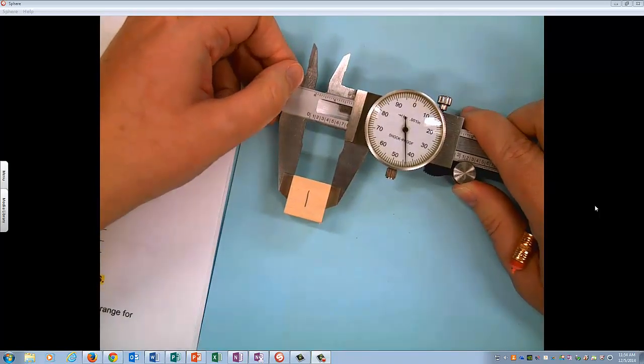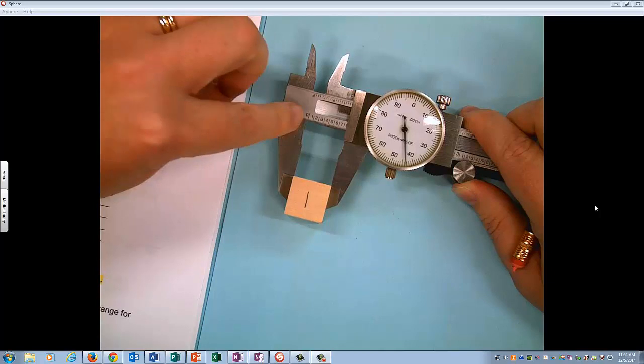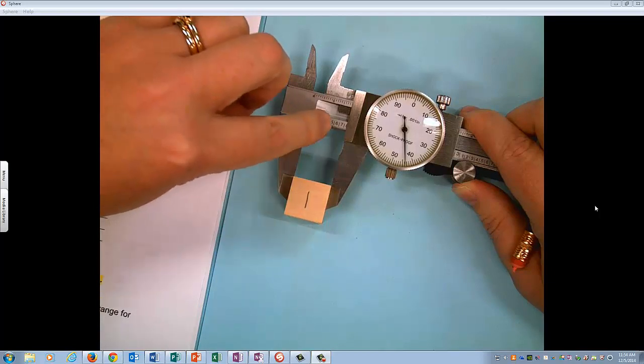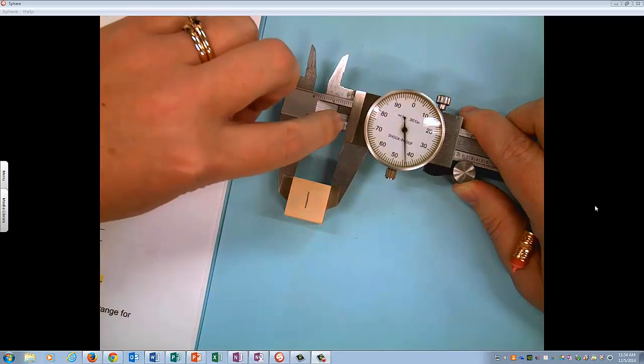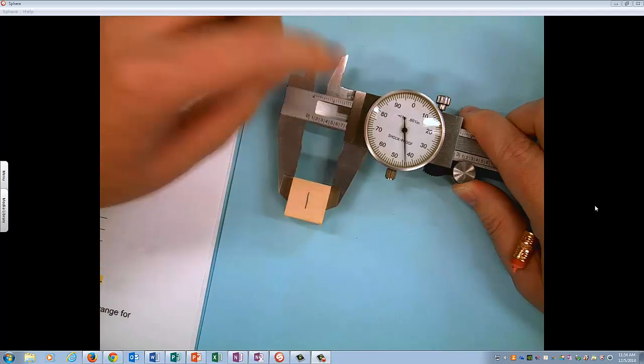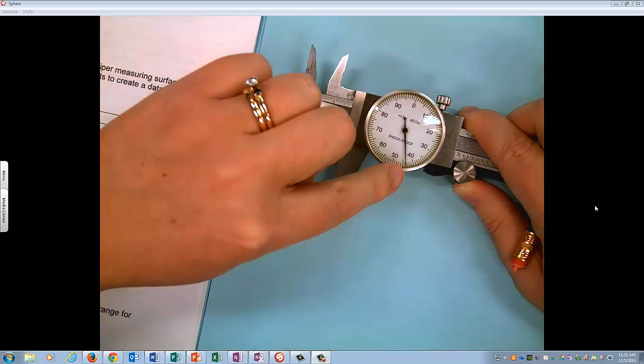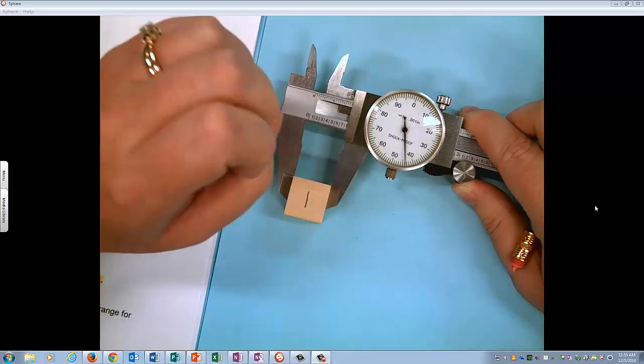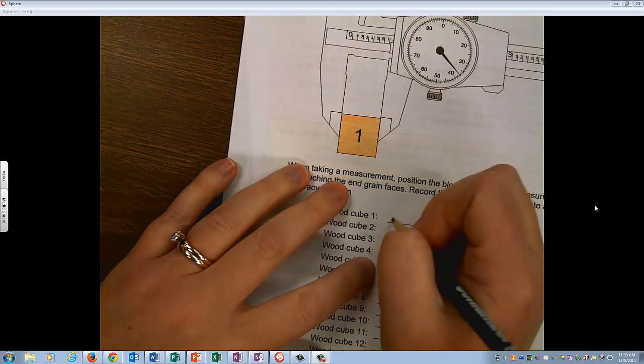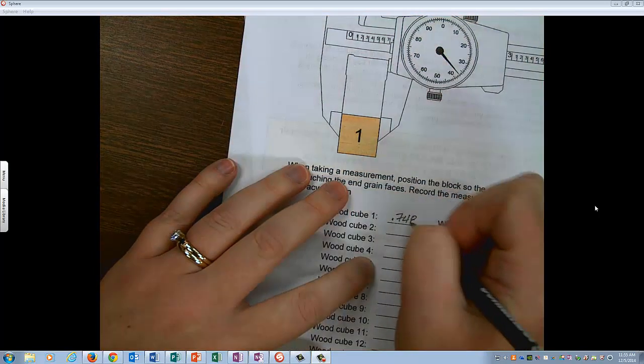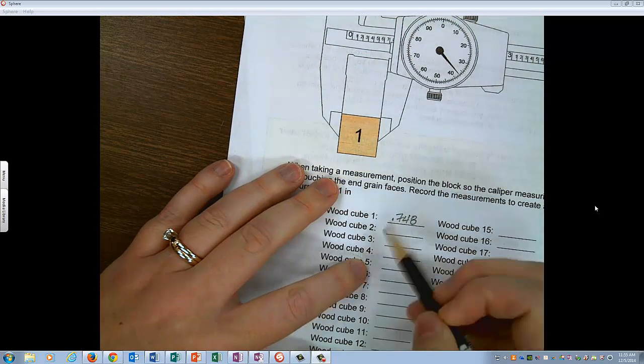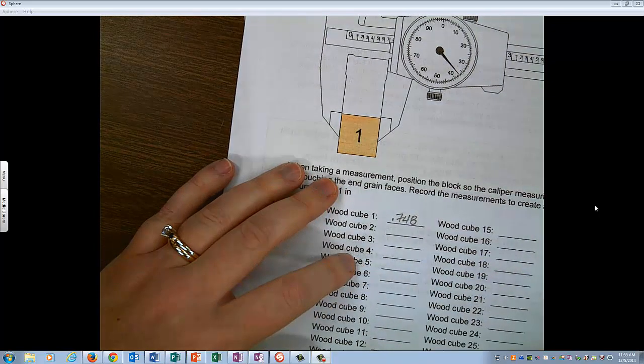So hopefully you guys can see this on the document camera. But I see point seven. I can't read eight because I only see the line behind seven. So point seven four eight. So I am going to write that here on the paper. And then continue to measure all of my cubes.